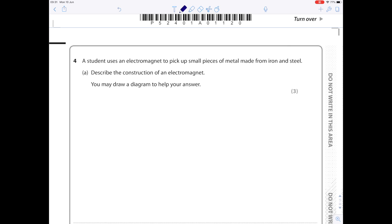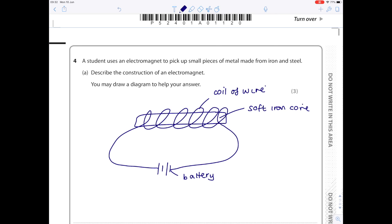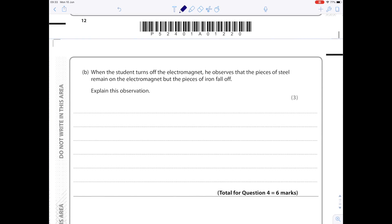A student uses an electromagnet to pick up small pieces of metal made from iron and steel. Describe the construction of an electromagnet. You may draw a diagram to help your answer. First of all, I'm going to draw my iron core, and then I'm going to show the coils of wire which wrap around the iron core. Remember, we need to attach it to a power source, so just a battery here. Now let's label it: soft iron core, coil of wire, and here's your battery.